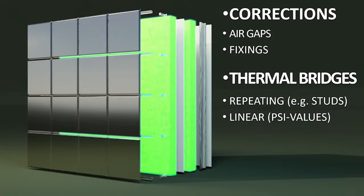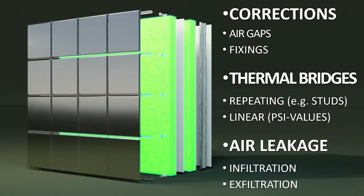Psi values can also be supplied by product manufacturers, or suitable default values can be used. Previously it was also possible to use accredited construction details; however, these have not all been updated in line with current building regulations, so may no longer be acceptable in all areas of the UK and should be used with caution. Finally, we must consider the movement of air, which can take the form of infiltration where cold air leaks in, or exfiltration where warm air leaks out. Because of the non-linear nature of U-values, unrealistic thicknesses of insulation may be required to increase performance, so reducing the losses associated with air leakage is critical to successfully designing buildings with exceptionally low energy use.